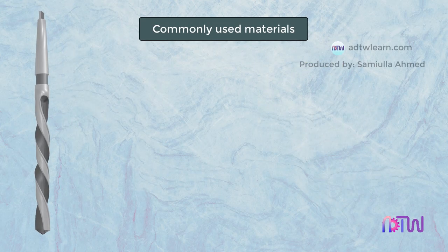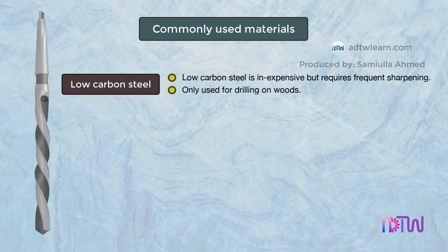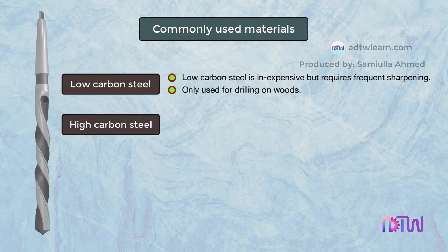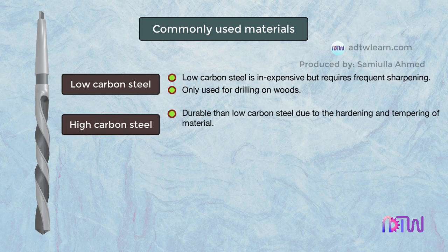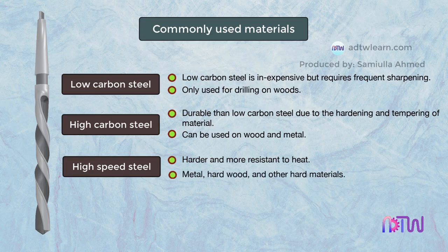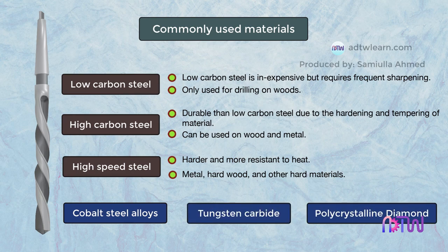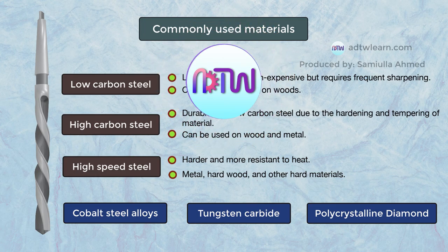Commonly used materials for twist drills are: low carbon steel — inexpensive but requires frequent sharpening, used only for drilling wood; high carbon steel — more durable due to hardening and tempering, can be used on wood and metal; high speed steel — harder and more resistant to heat, used to drill metal, hardwood, and other hard materials. Apart from these, cobalt steel alloys, tungsten carbide, and polycrystalline diamond are also used. I hope you have understood the drill tool nomenclature.